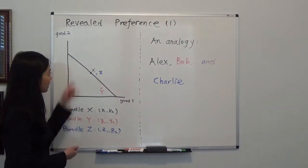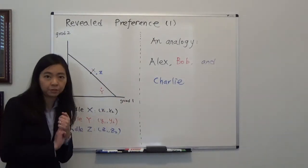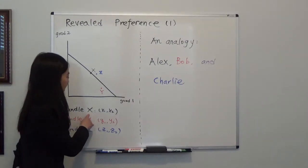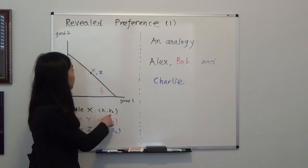So we have a budget line and we have good one and good two. We have three bundles. Bundle X has X1 amount of good one and X2 amount of good two.